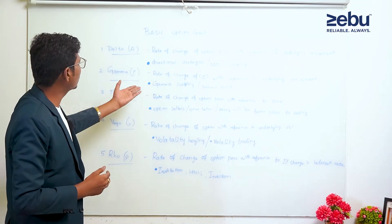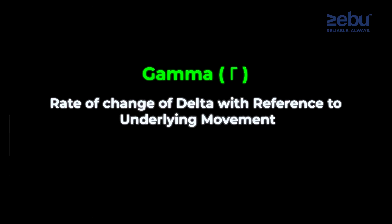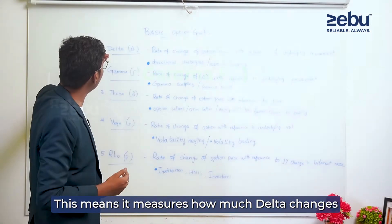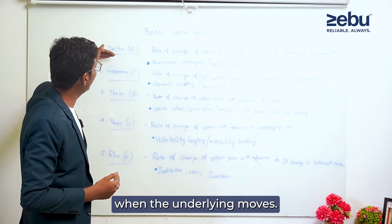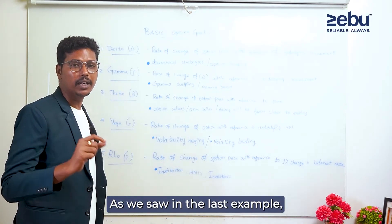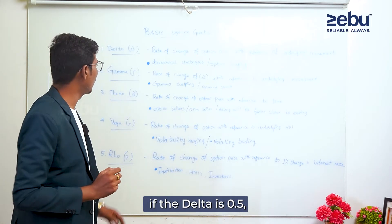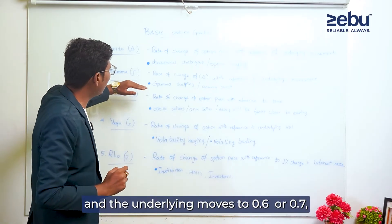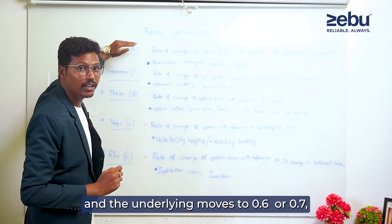Gamma is, by definition, the rate of change of delta with reference to underlying movement. If delta is 0.5, it will change to 0.6 or 0.7.